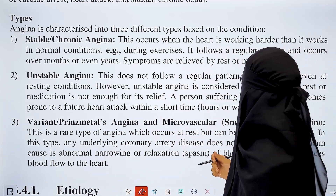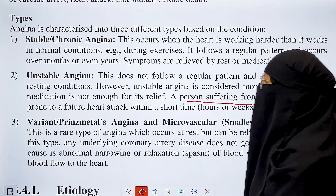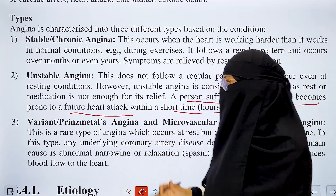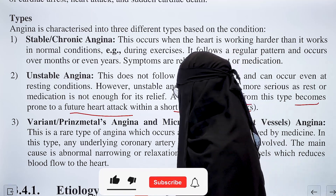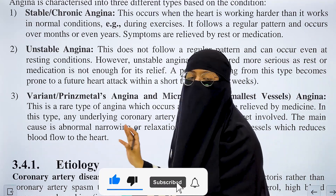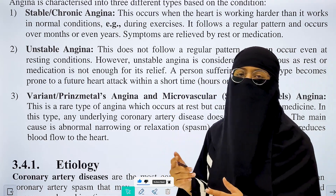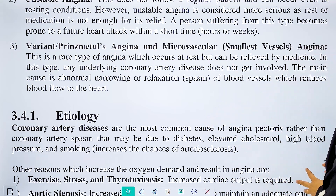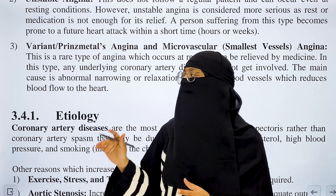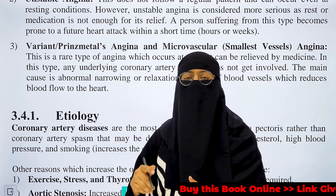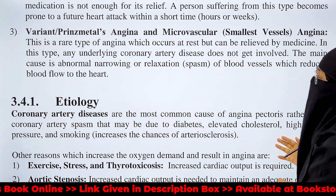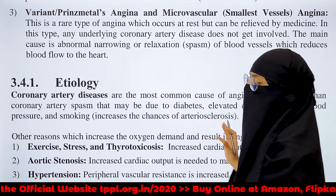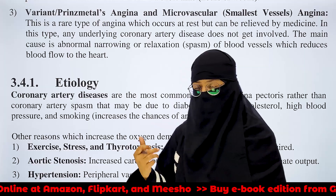Unstable angina does not follow any regular pattern; it can occur at any time. A person suffering from this type becomes more prone to a future heart attack within a short time, which can occur within hours and weeks.